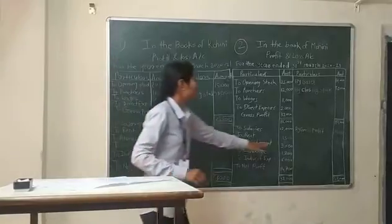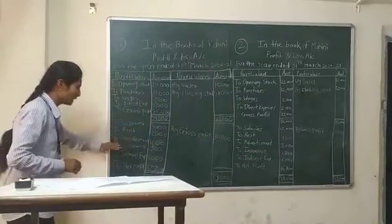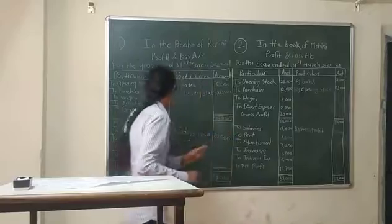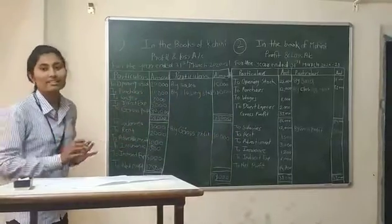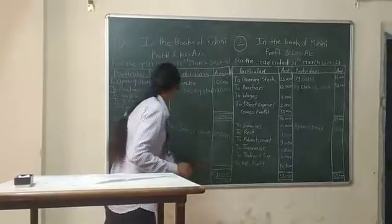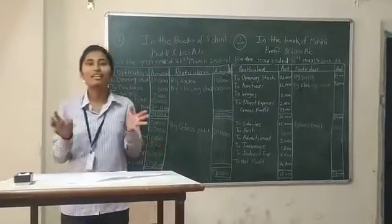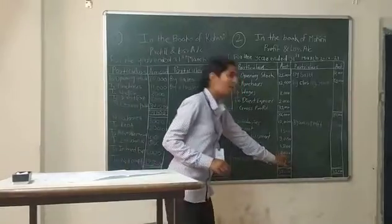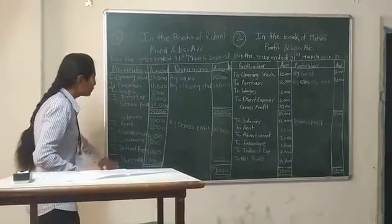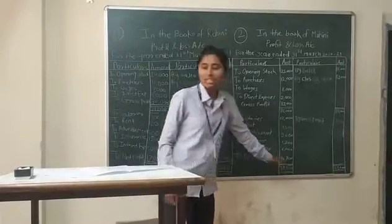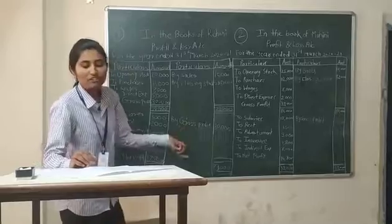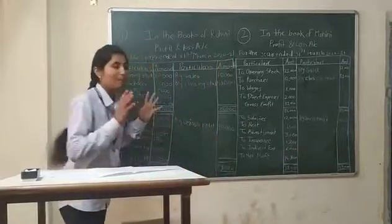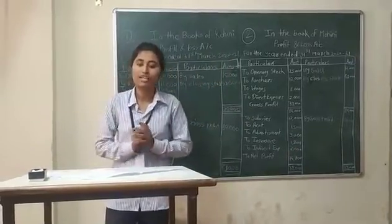Next is advertisement: $1,000 versus $3,000, a $2,000 difference. Then insurance: $1,500 versus $1,800, a $300 difference. Net profit for Rohini is $75,500 and for Mohini is approximately $4,700, a difference of around $1,700.